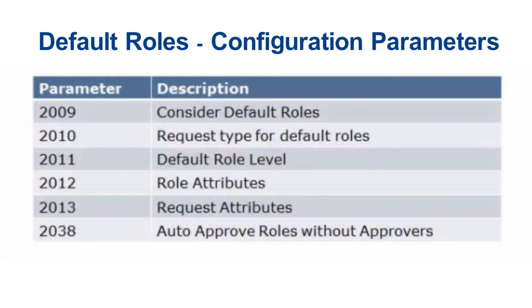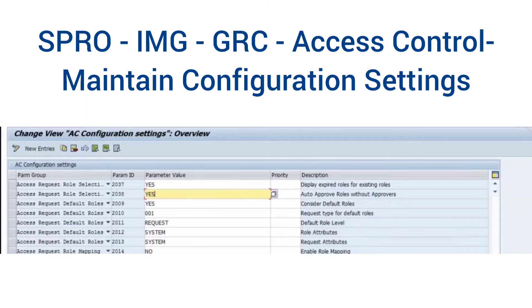To configure these parameters, we need to go to SPRO, IMG Customizing, then navigate to Governance Risk and Compliance, then Access Control, and then Maintain Configuration Settings. In this, you can find the parameters for Access Request Default Roles.